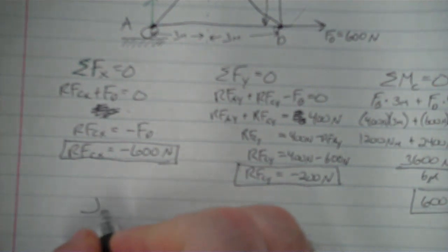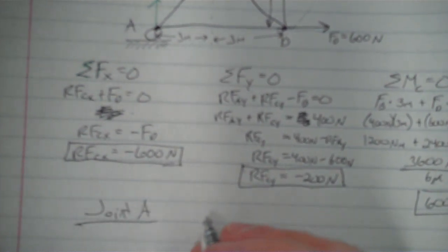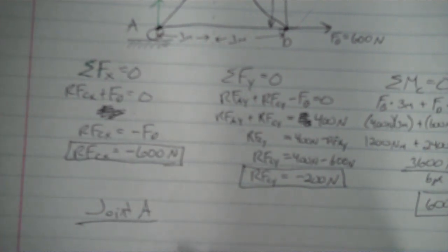So let's look at joint A. There's the joint. Now I have member AD coming in here. And I'm going to assume all these members are pulling outwards. I'm going to assume these members are in tension, because if they're not, this will come out to be negative, and that will tell me that it's in compression. So this is a force of AD, member AD on this joint.